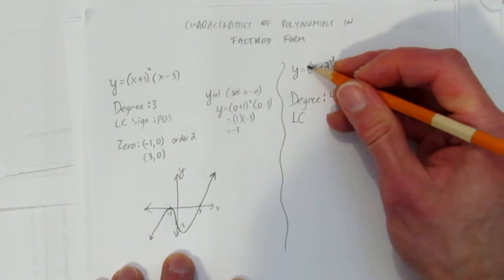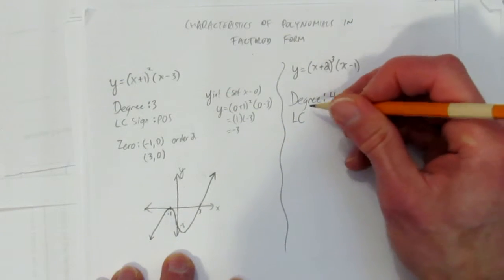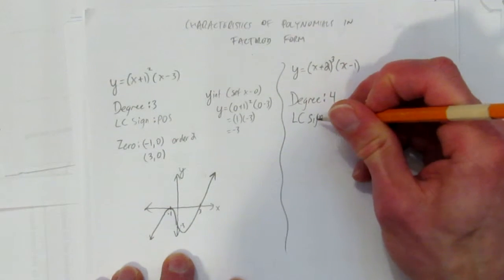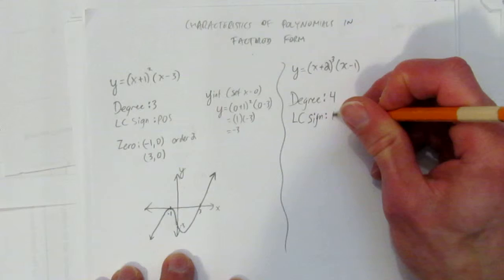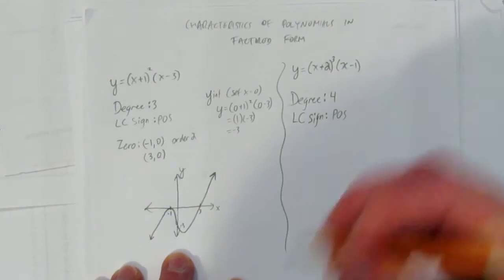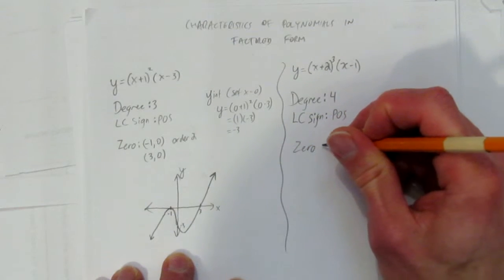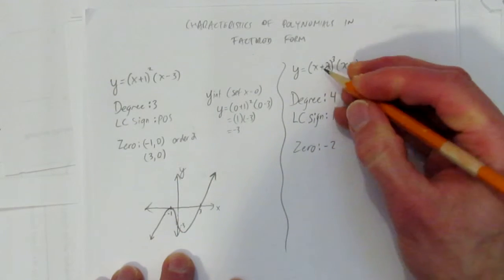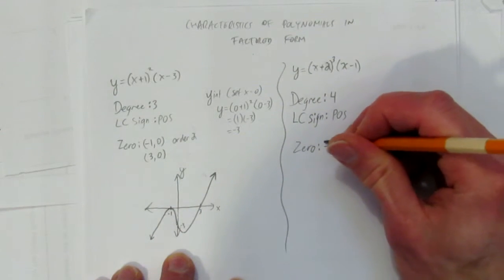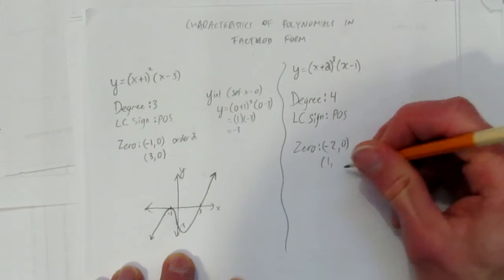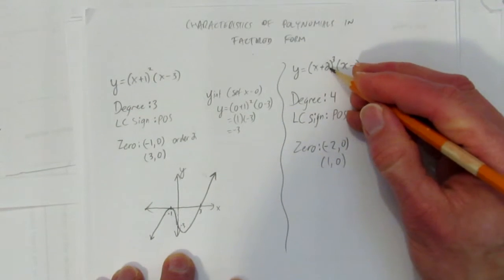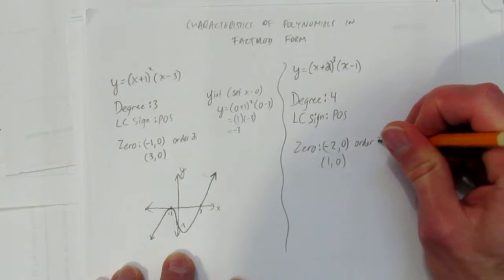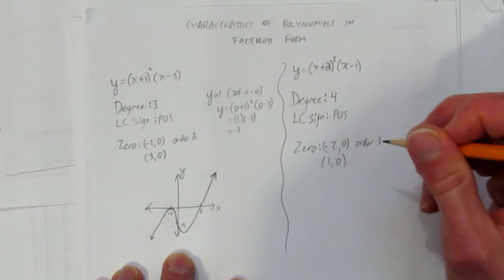Once again, the leading coefficient, there's just a 1 here, which is positive. So we say the leading coefficient sine. I shouldn't just write leading coefficient. I'll write leading coefficient sine is positive. And again, we'll identify the 0s. The 0s are at negative 2. That makes this bracket 0. And positive 1. That makes the second bracket 0. But notice that this bracket is an order 3 bracket. That is, it's going to behave close to that 0 like a cubic.